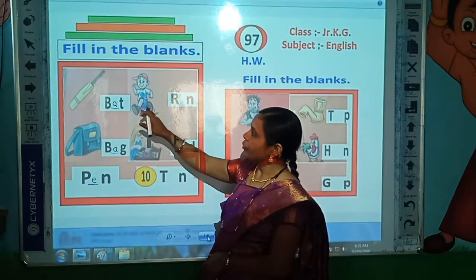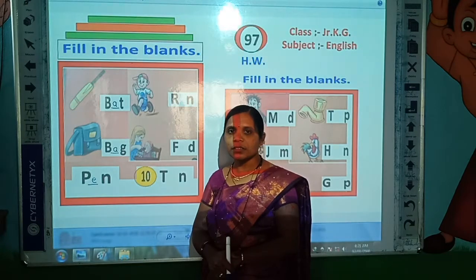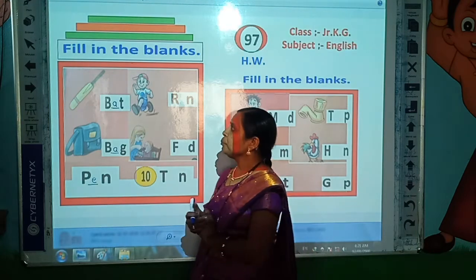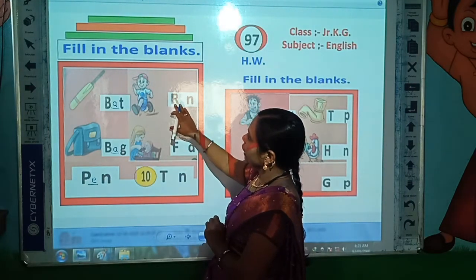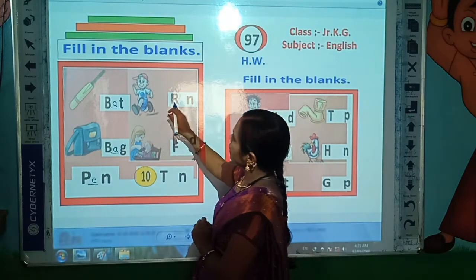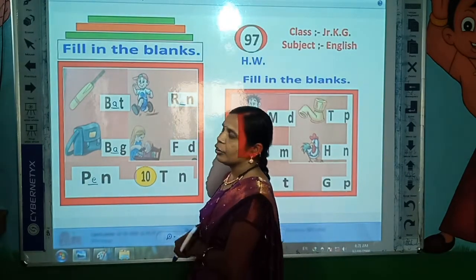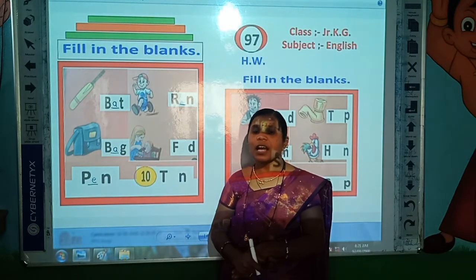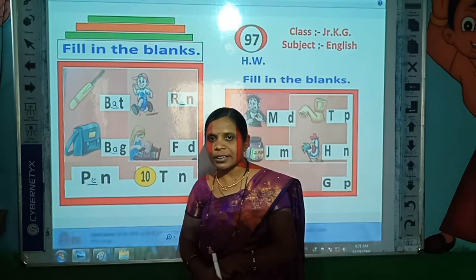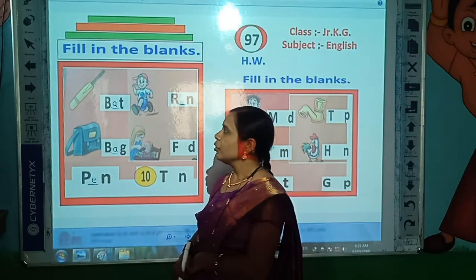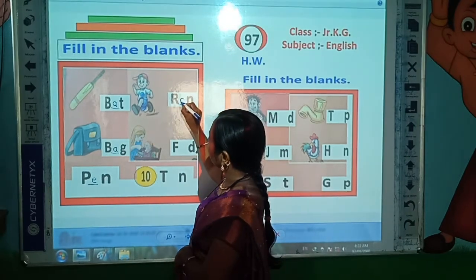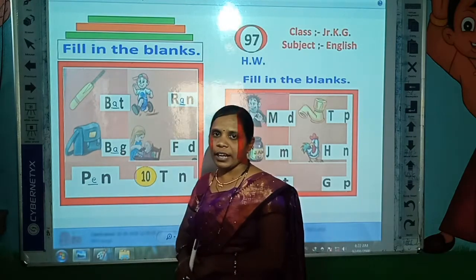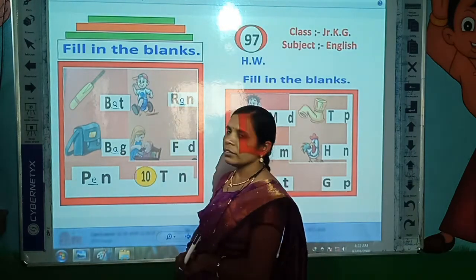Now look here. Which picture is this? Yes, this is the picture of RAN. Now read this. What is the spelling of RAN? Yes, R-A-N, RAN. R-A-N, RAN. So write here A. Write here A. R-A-N, RAN. R-A-N, RAN.